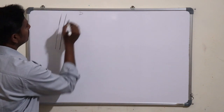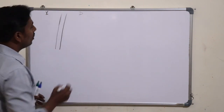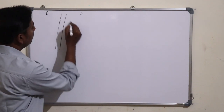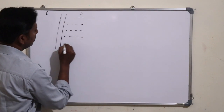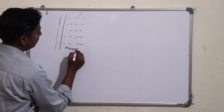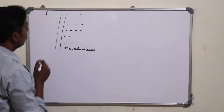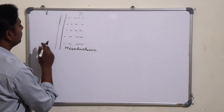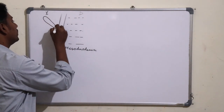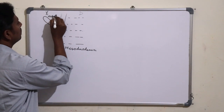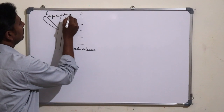This is the dorsal aspect of the developing gut, and this is the ventral aspect of the developing gut. On the dorsal aspect of this developing gut lies the mesoduodenum. On the ventral aspect of the developing gut develops an endodermal bud known as the hepatic bud, from which the liver will develop.